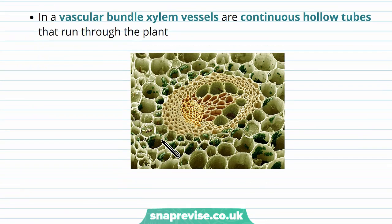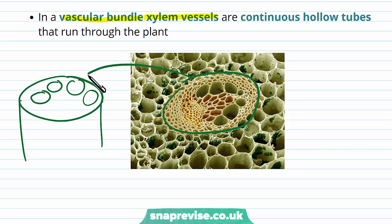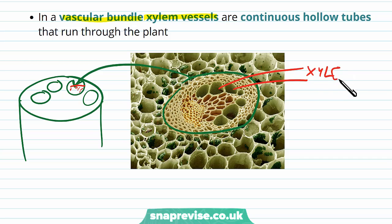Looking at this electron micrograph, we can identify the xylem vessels inside a vascular bundle. This is zoomed in from a stem cross section where vascular bundles run around the edge of the stem. The xylem tissue sits on the inside of the vascular bundle, with the phloem on the outside. The large vessels here are the xylem vessels — they're much larger than the phloem vessels and tend to have thicker walls as well.